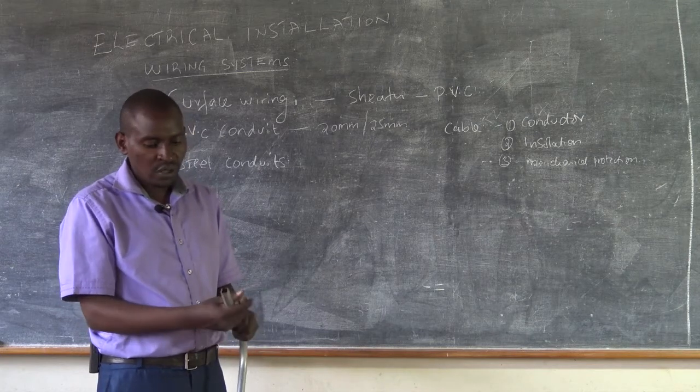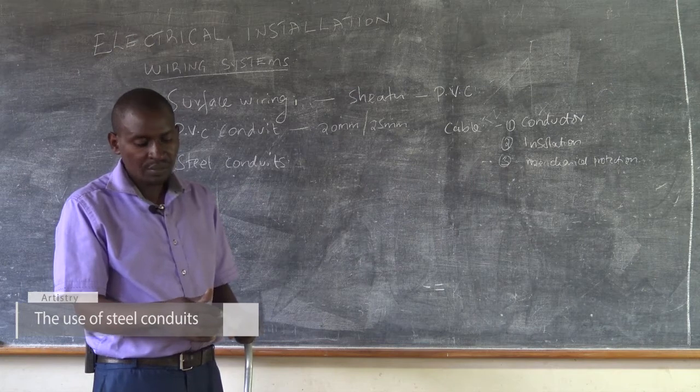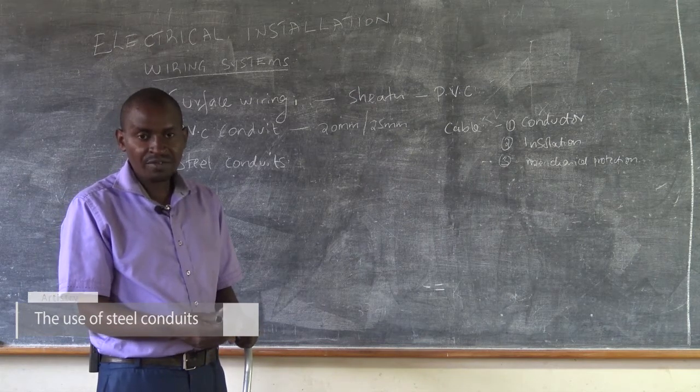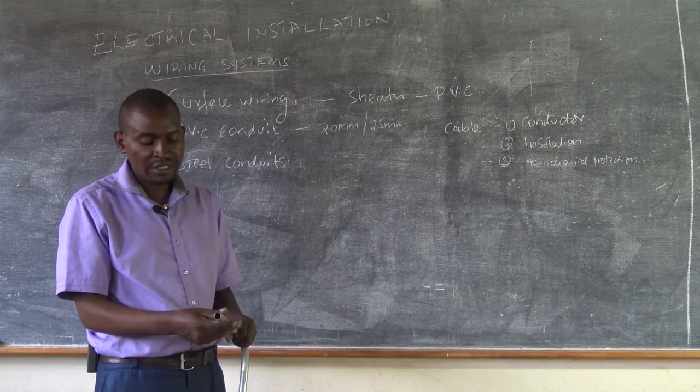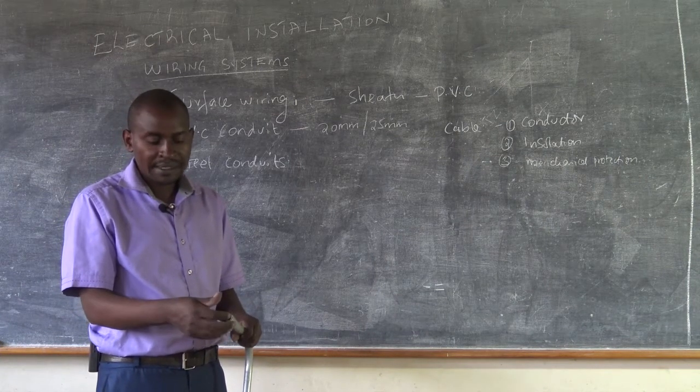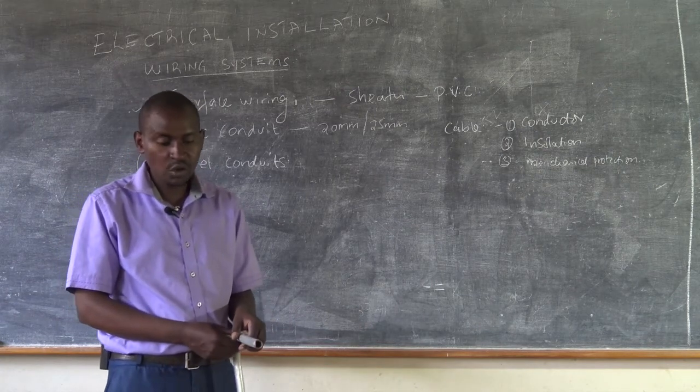It is quite strong. So when the cables are running through it, it means that they have a better protection against mechanical damage that would probably destroy them. So that's what we refer to as steel conduit.